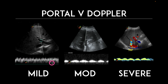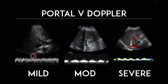If you see no significant variation in amplitude, it's mild. If you see a little bit of waviness, it's moderate. And if you see a lot of waviness, it's severe. For actual numbers: less than 30% change between peak and trough is mild, 30–50% change is moderate, and greater than 50% change puts it in the severe category.